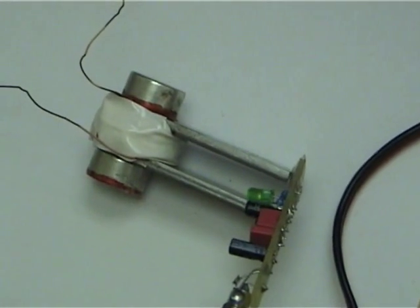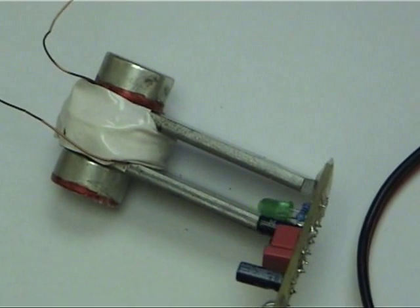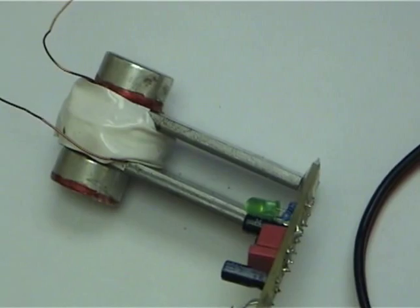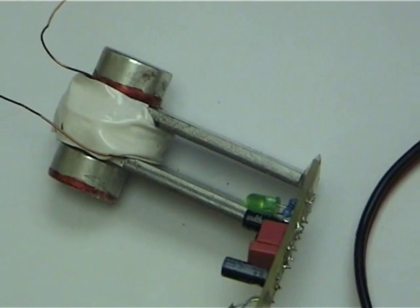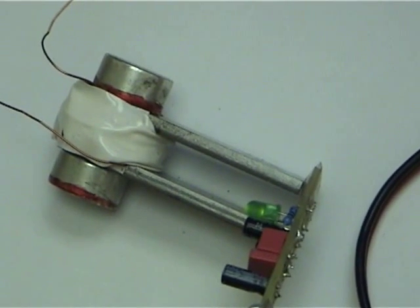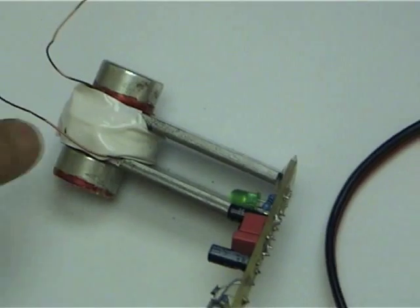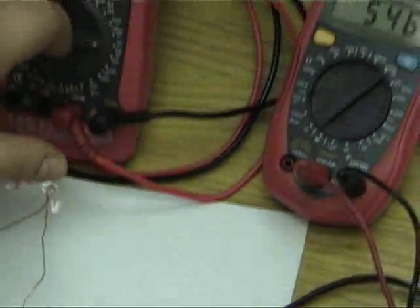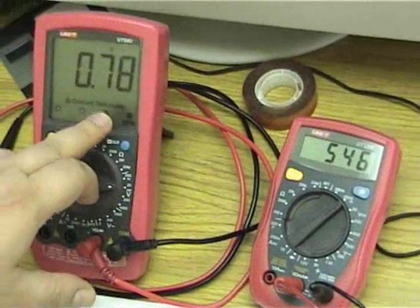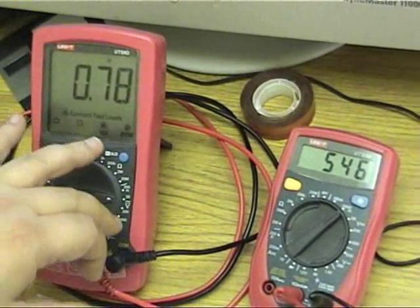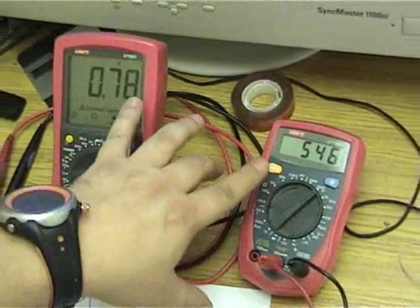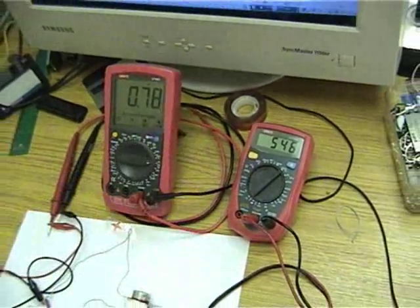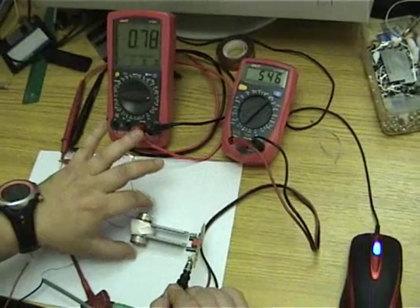So you can see the LED lights every time. Turn off and turn on again. You can see when the coil is energized, it consumes around 780 mA. And 0.546 volts is right on the coil.